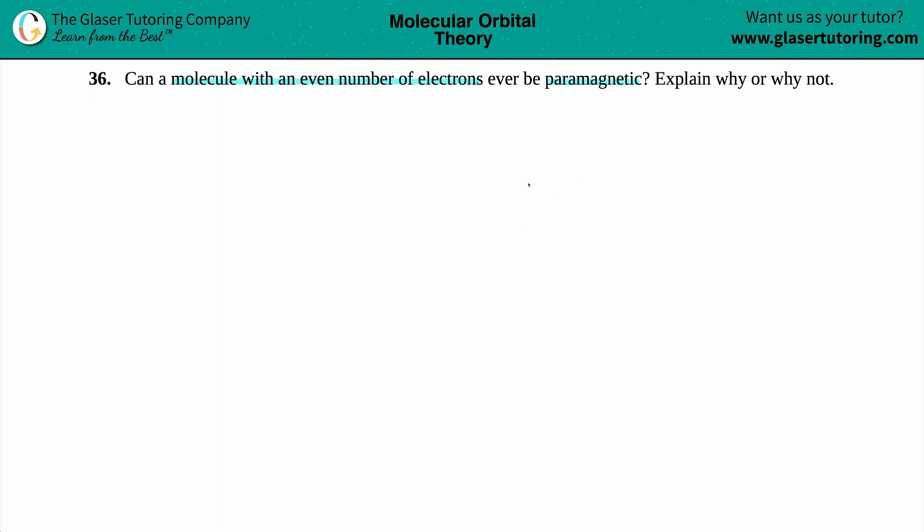Okay, so the answer lies in what is basically the definition of being paramagnetic. Now we're talking about electrons here, so paramagnetic definitely has to do with something about electrons.